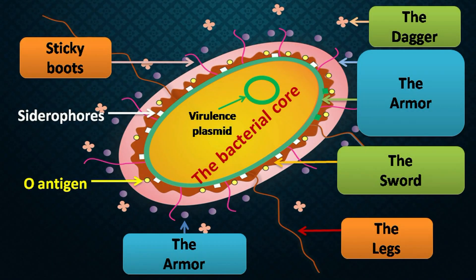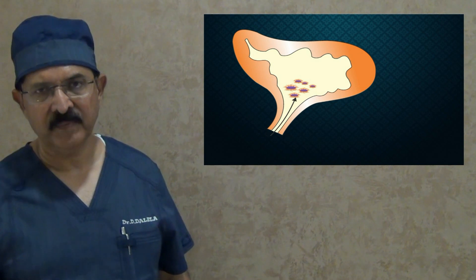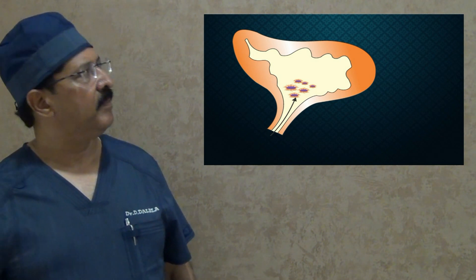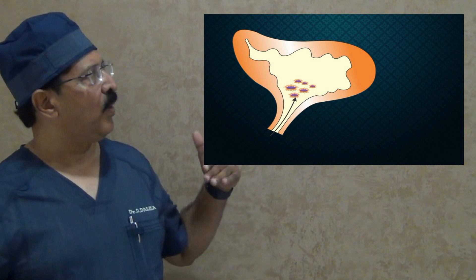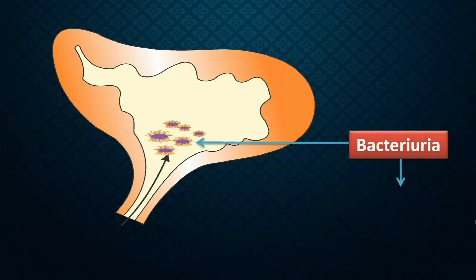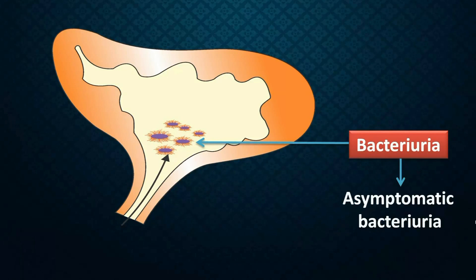So when you have these bacteria inside the urinary bladder — an invader which has a dagger and a sword, capable of sticking onto any surface and running very fast inside the bladder — it will obviously multiply very fast. When patients get a certain amount of bacterial count inside the urinary bladder they are said to be suffering from bacteriuria. If they do not have symptoms, they are called asymptomatic bacteriuria.